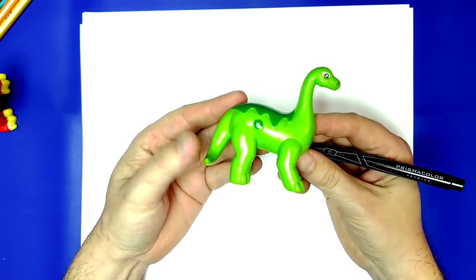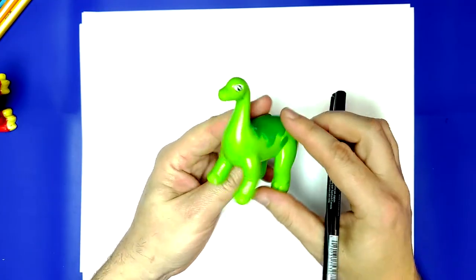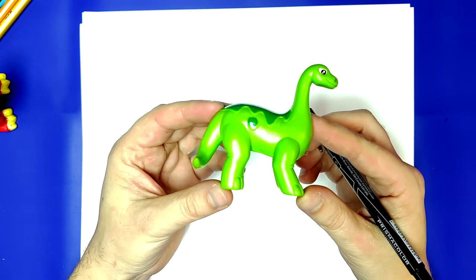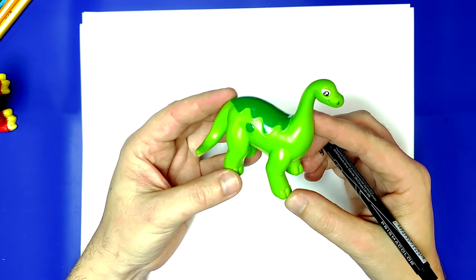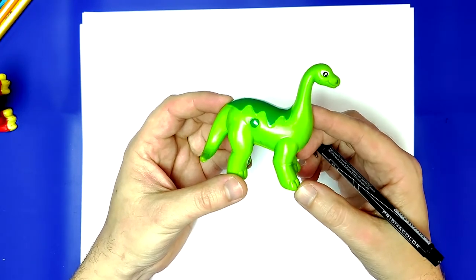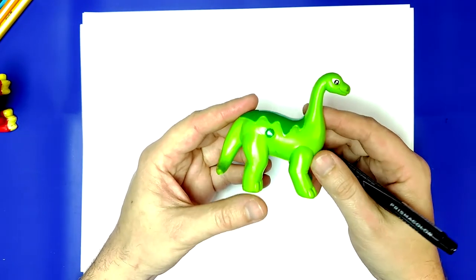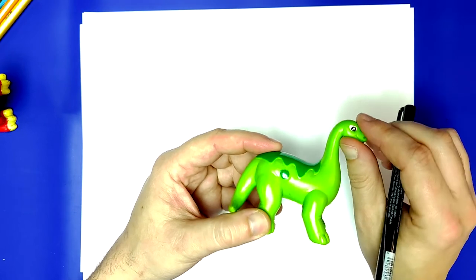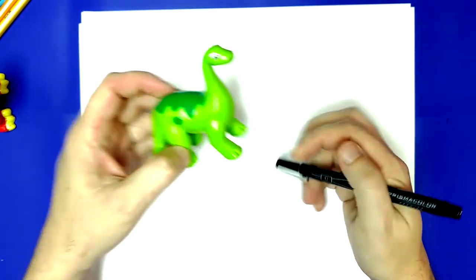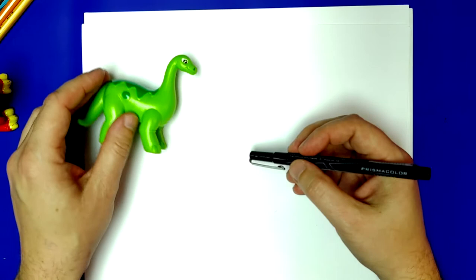Alright. So, look at the dinosaur. See him? Alright. So when I was a kid, this was called a Brontosaurus, but now it's probably better known as an Apatosaurus. One day when you are in science class, you can look up the difference and why the name changed.